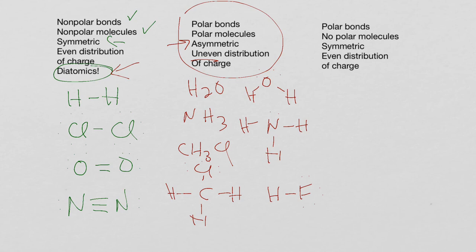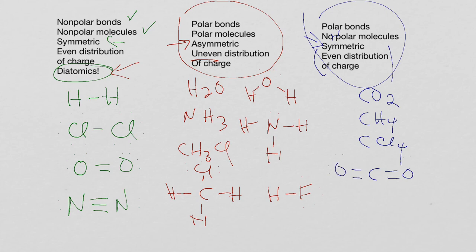The final category here, I have polar bonds, but they're nonpolar molecules. They're symmetrical, because there's an even distribution of charge. The ones that show up most often would be carbon dioxide, methane, CH4, or something like CCl4. So, for CO2, I have a double bond O on both sides, with my four electrons on my oxygen. My CH4, four bonds are the same.